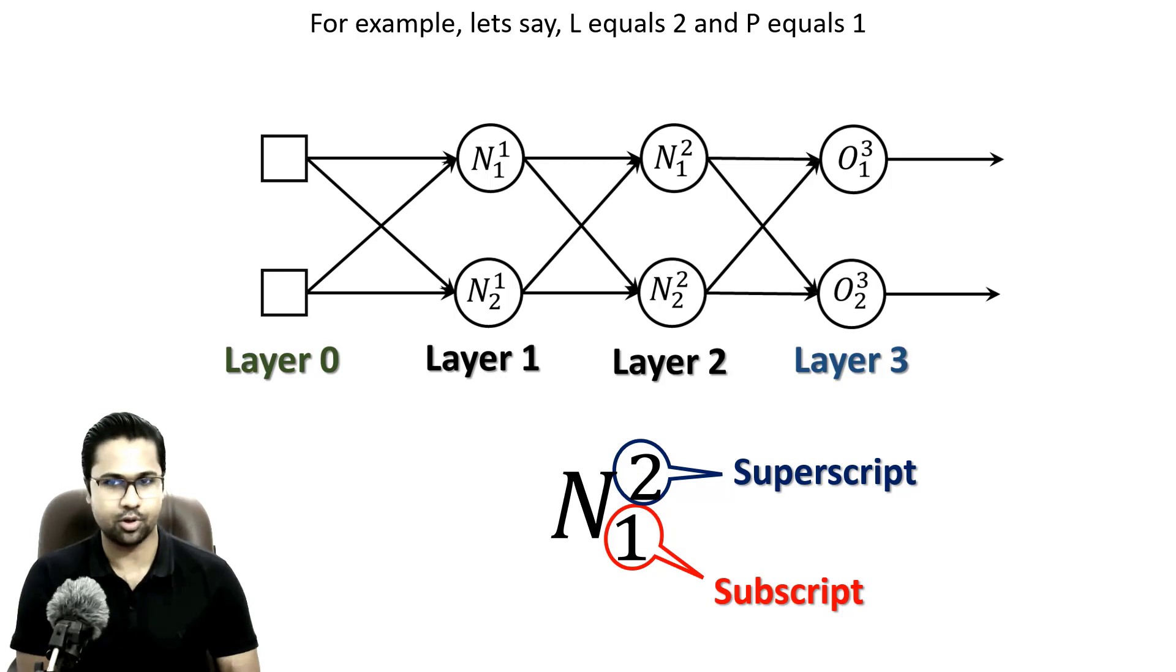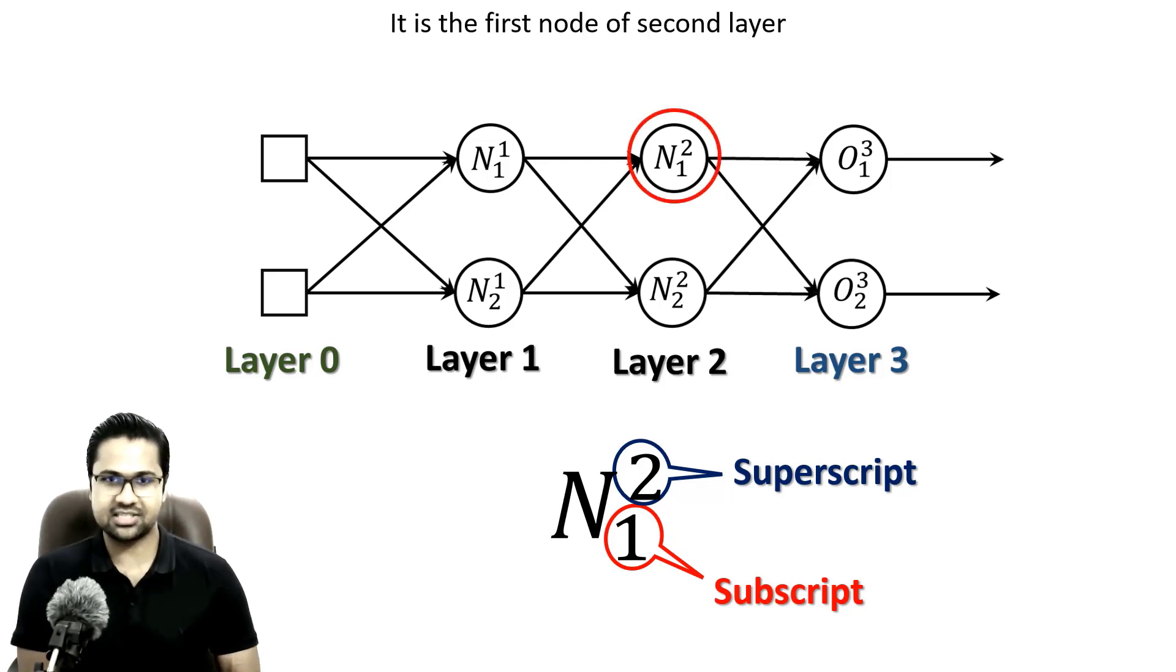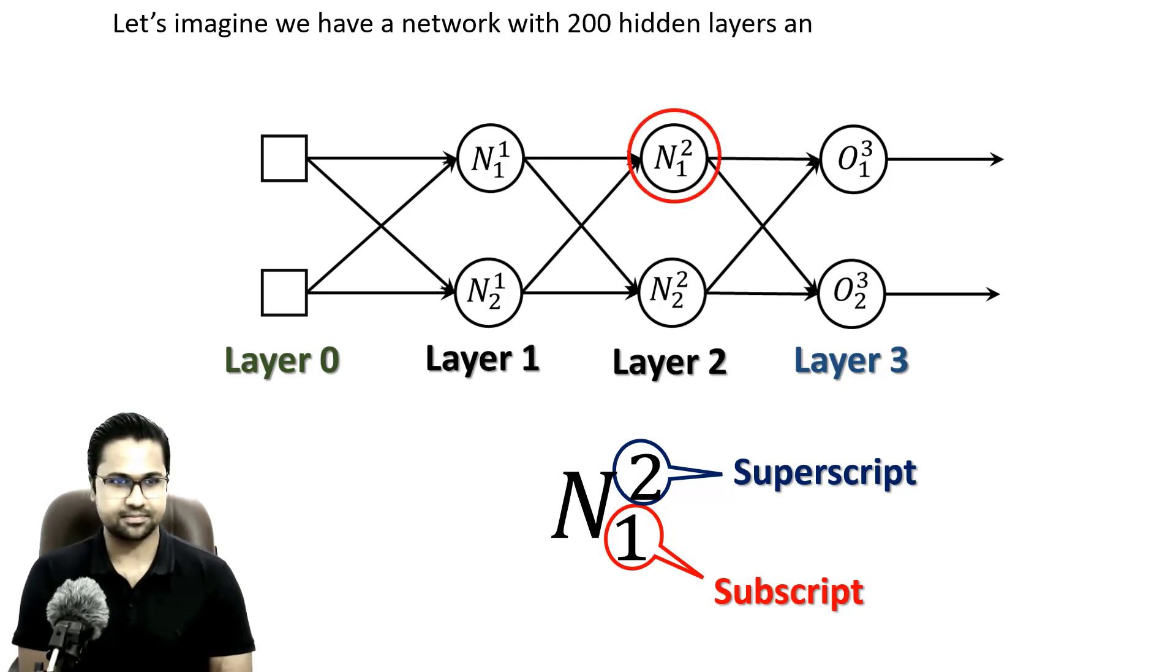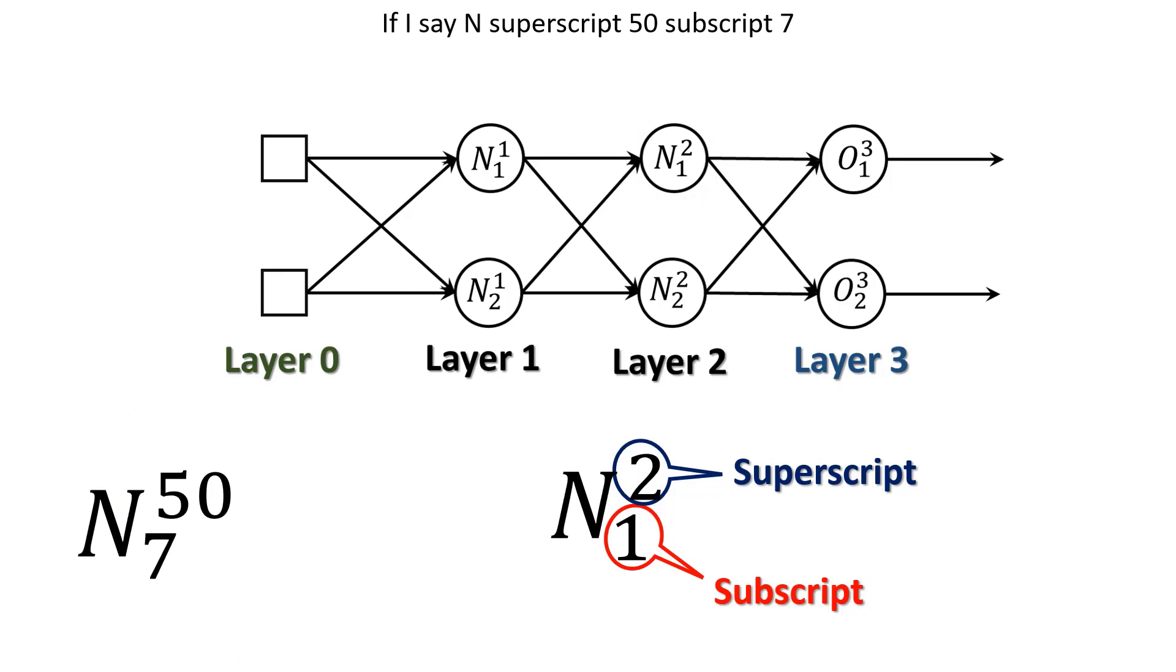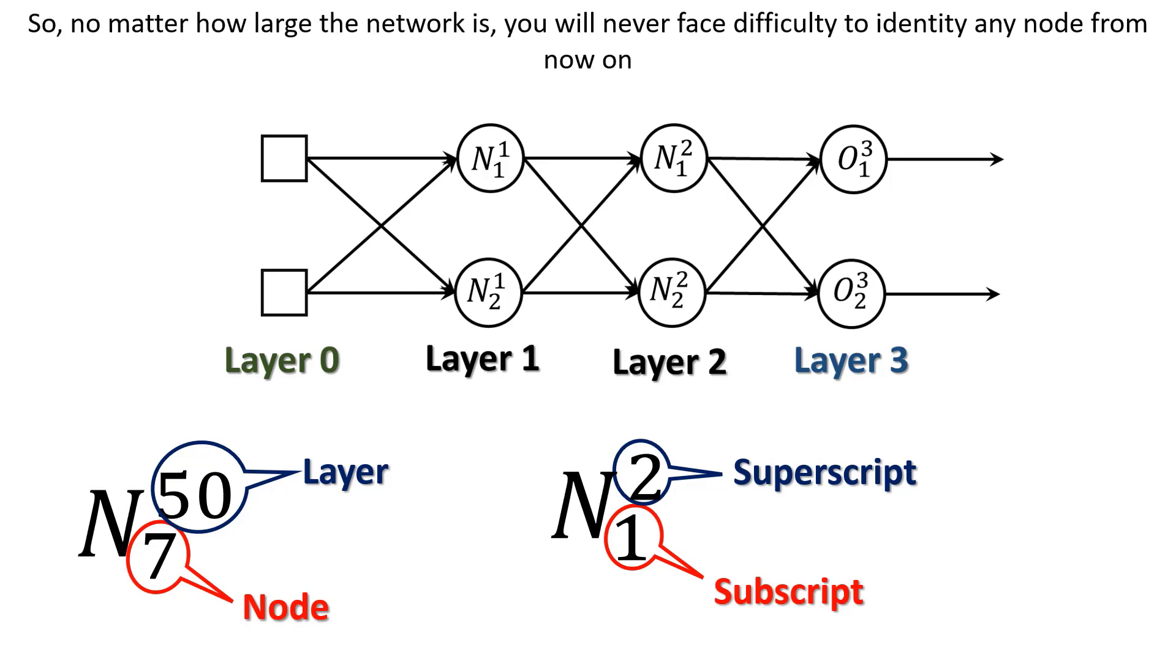For example, let's say L equals 2 and P equals 1. It is the first node of the second layer. Let's imagine we have a network with 200 layers and 1600 hidden nodes. No matter how many layers and nodes are there, if I say N superscript 50 subscript 7, you know this node belongs to hidden layer number 50 and it is the seventh node of that layer. So no matter how large the network is, you will never face difficulty to identify any node from now on.